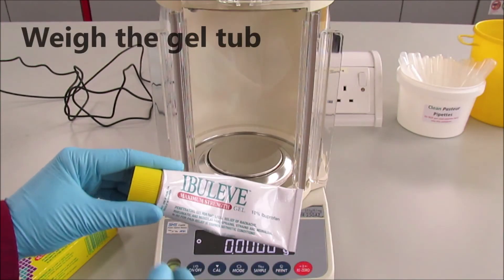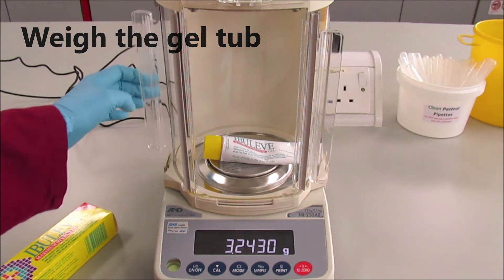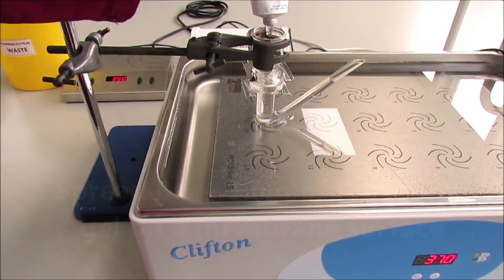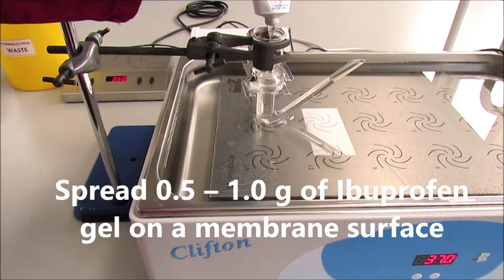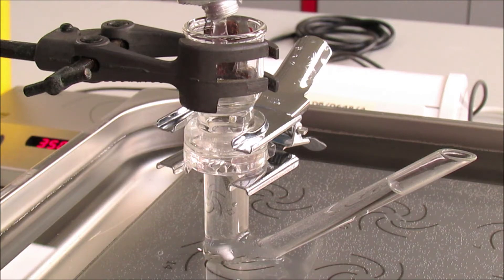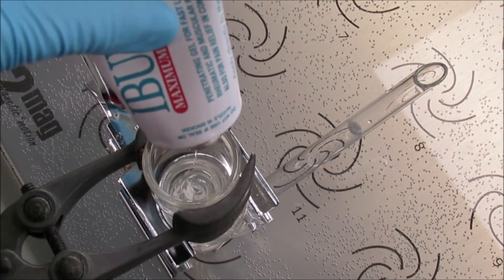We also need to check the weight of the gel tube before the experiment. Then once we charge the FRANS cell with the gel, we will weigh the gel tube again. By the difference we will work out how much gel we have placed on the membrane.